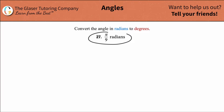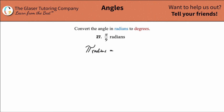Let's convert π/9 radians into degrees. In order to do this conversion, we want to know a known relationship: that there are π radians equivalent to 180 degrees.